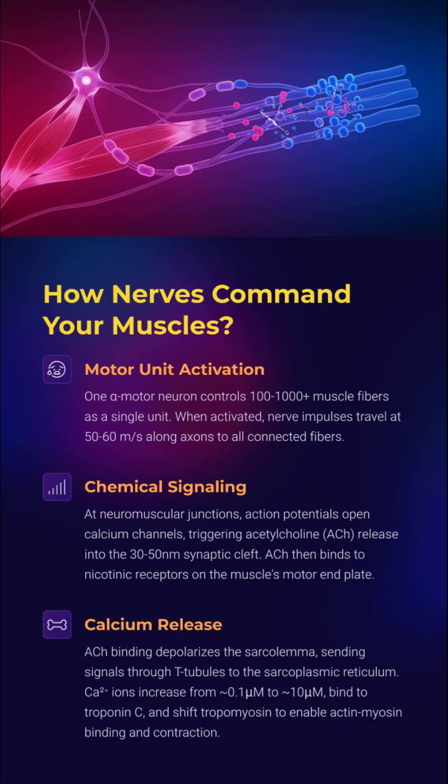A single motor neuron can activate over a thousand fibers. Electrical signals travel at up to 60 meters per second, reaching the neuromuscular junction. There, acetylcholine is released into the synaptic cleft and binds to nicotinic receptors on the muscle membrane. This triggers calcium release from the sarcoplasmic reticulum, activating contraction at the cellular level.